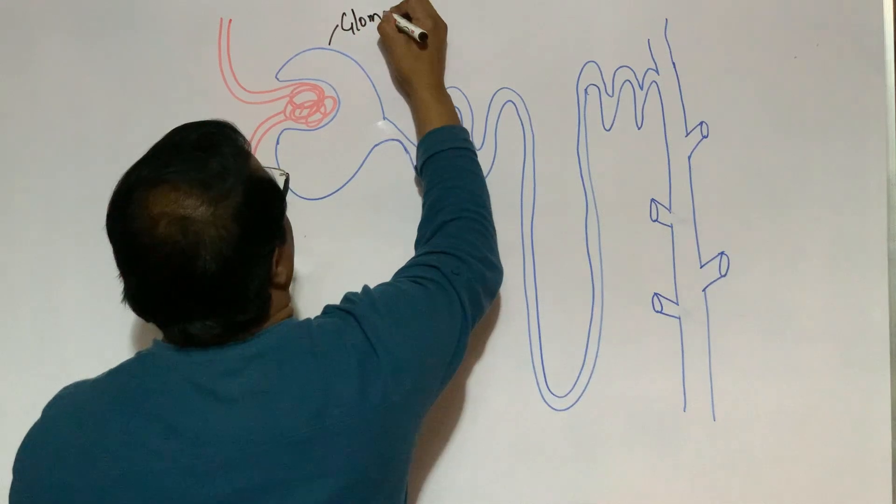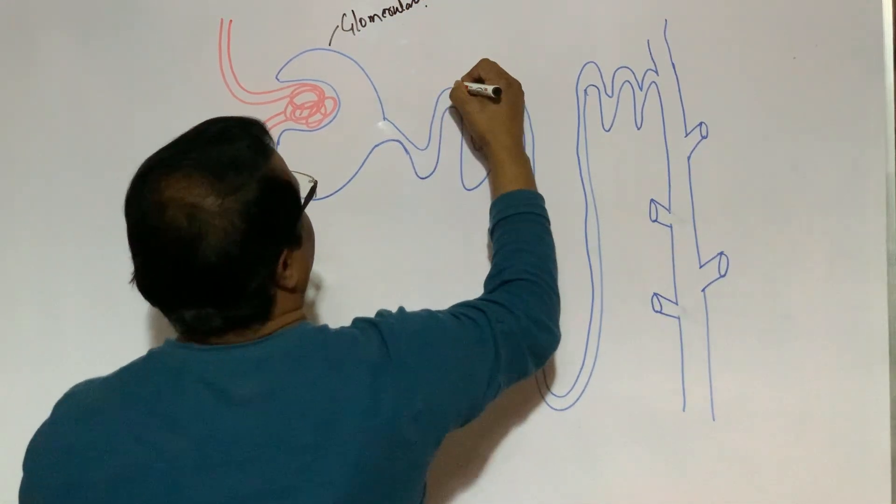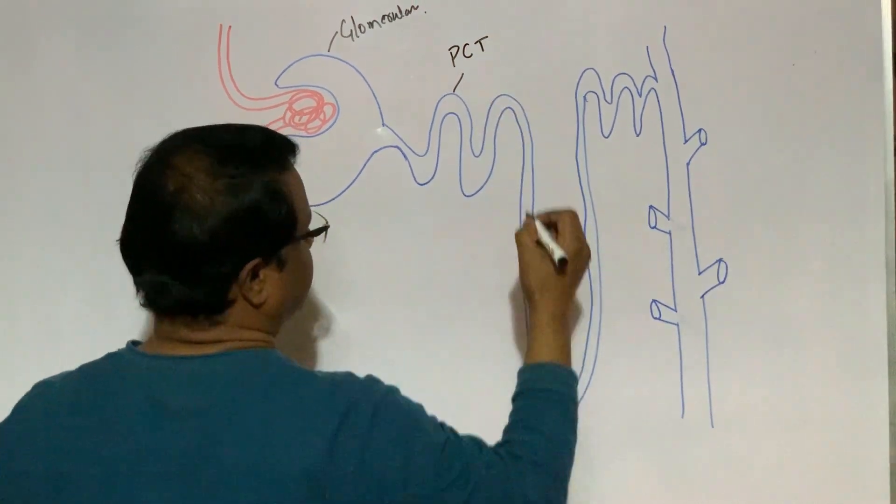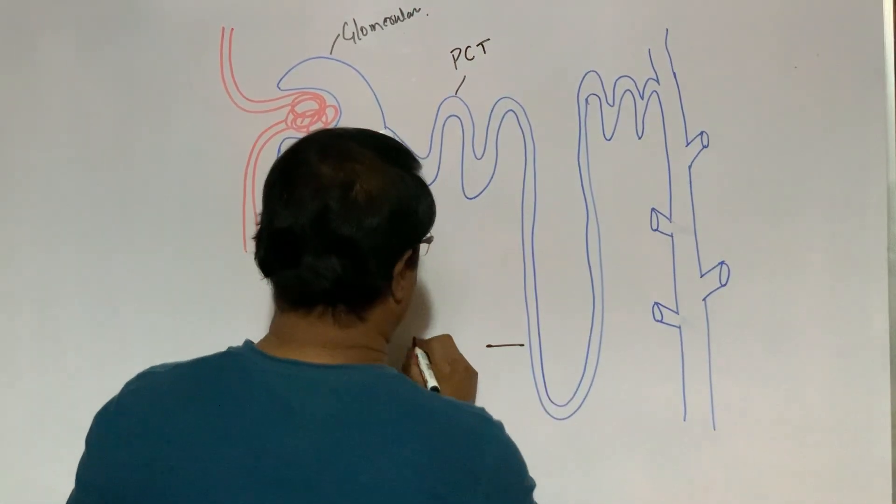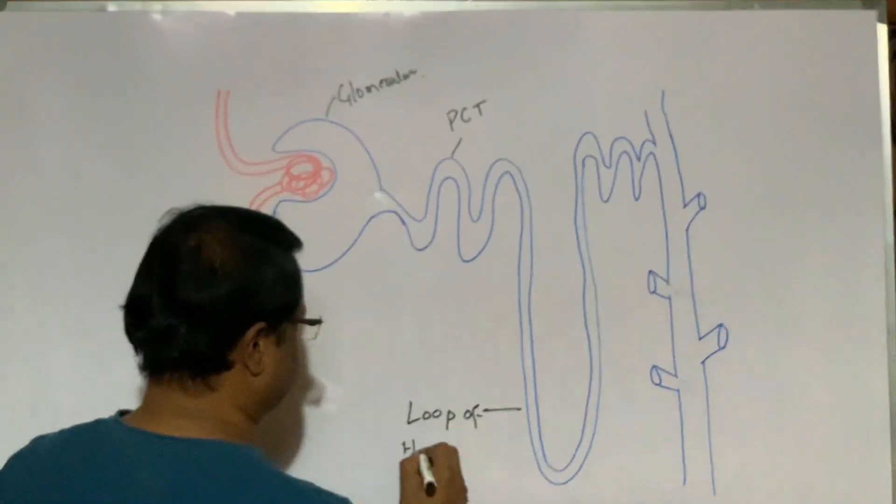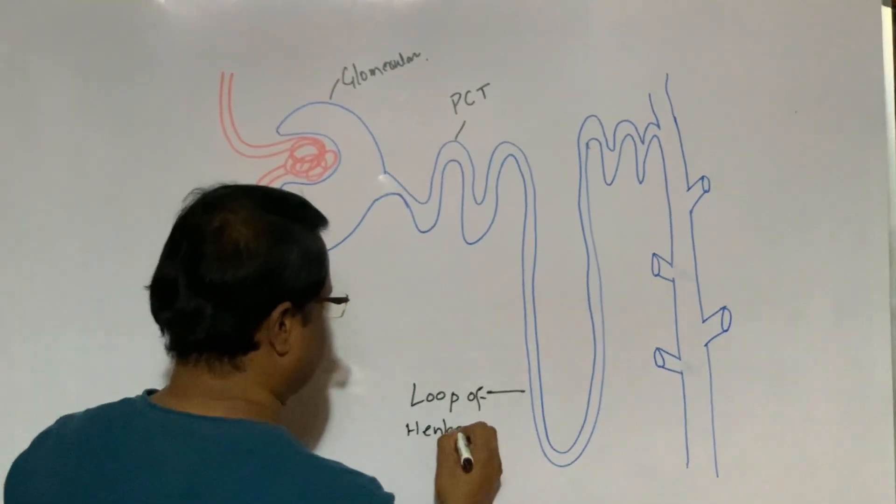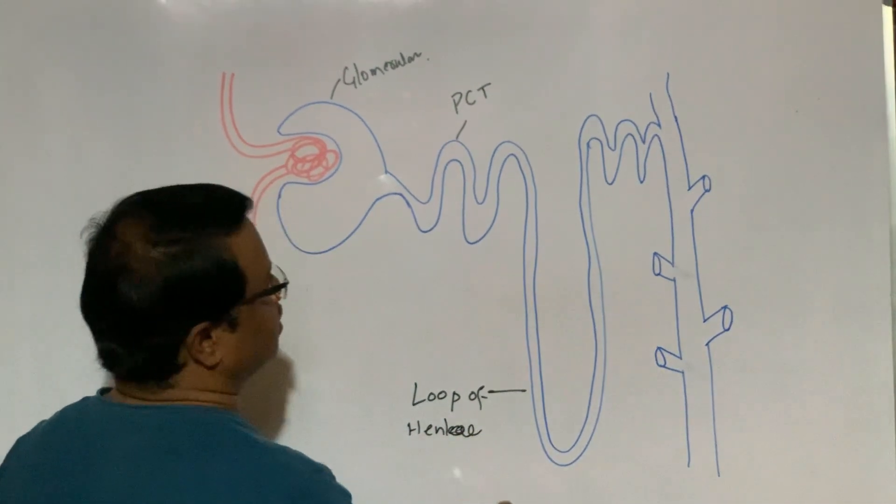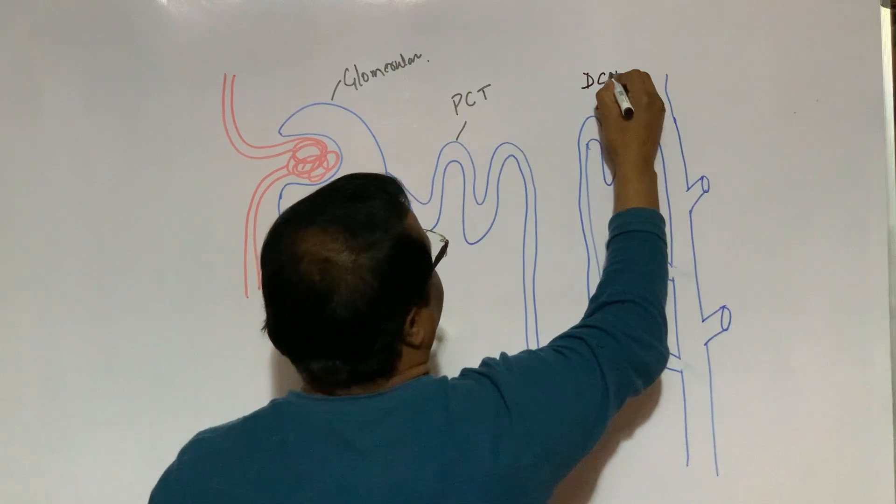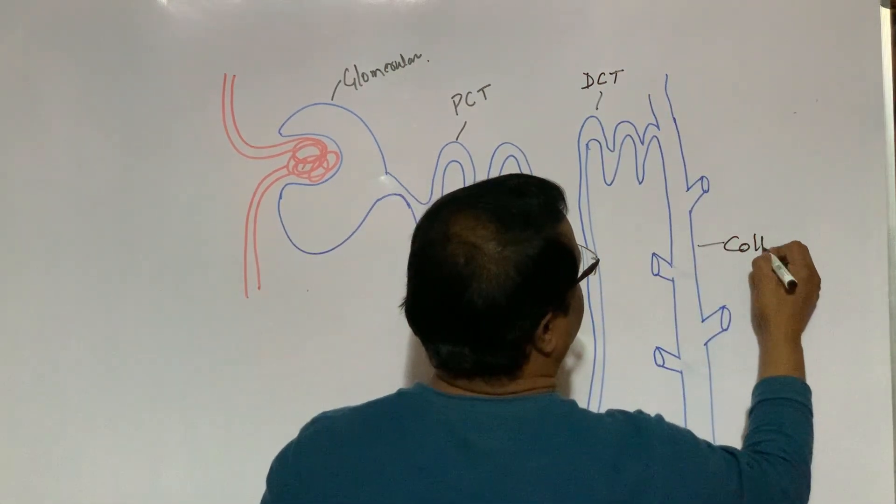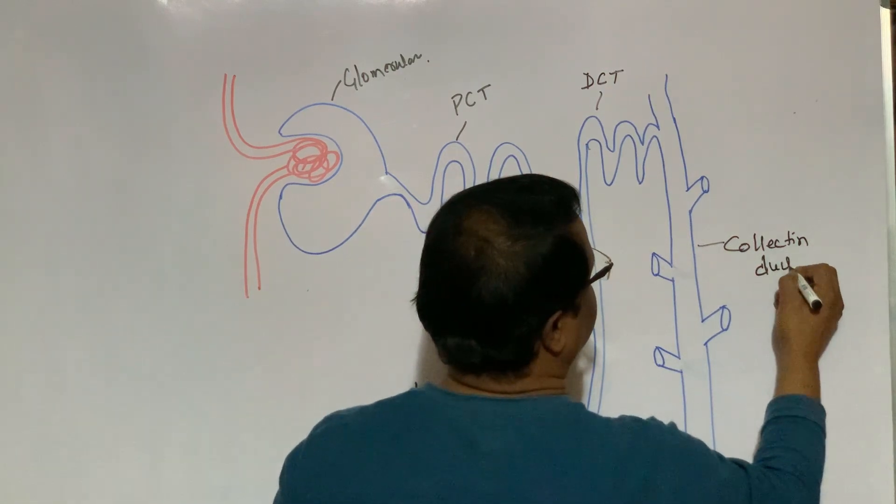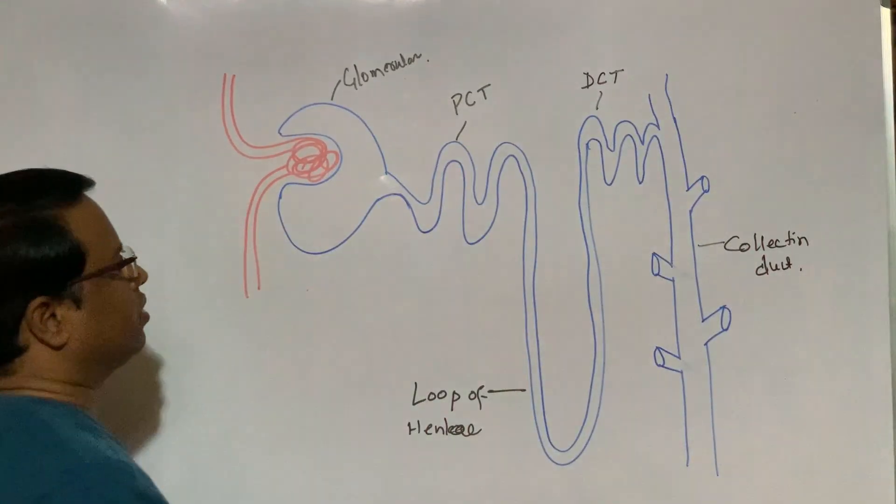number two, proximal convoluted tube; number three, loop of Henle; distal convoluted tube; collecting duct.